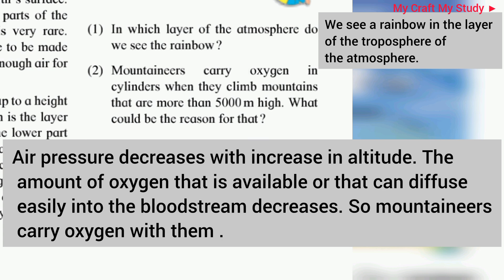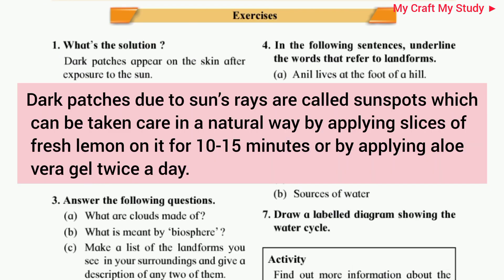Next question: Mountaineers carry oxygen in cylinders when they climb mountains that are more than 5000 metres high. What could be the reason for that? The answer is that as we go higher in altitude, air pressure decreases. The amount of oxygen available or that can diffuse easily into the bloodstream decreases. So mountaineers carry oxygen cylinders with them.